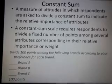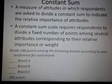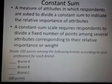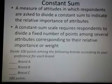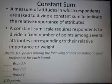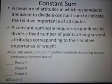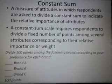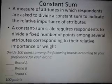The first scale we will discuss is the constant sum scale. It is a measure of attitudes in which respondents are asked to divide a constant sum to indicate the relative importance of attributes. Respondents are asked to give numbers to different attributes, and the total of those numbers should be a constant already given by the researcher.